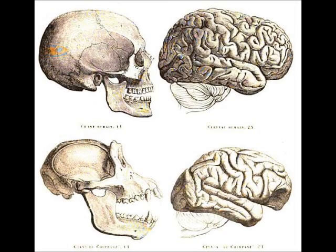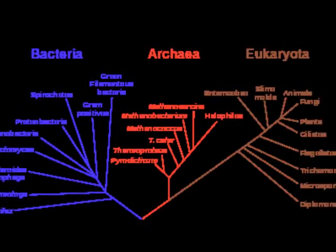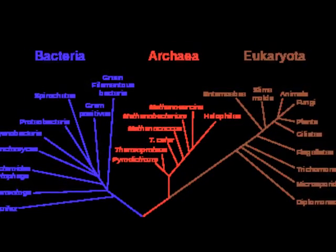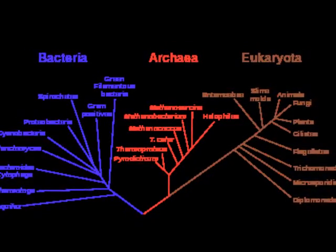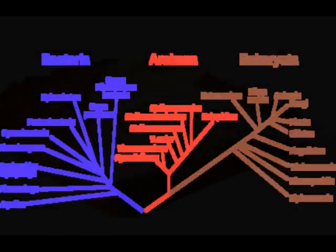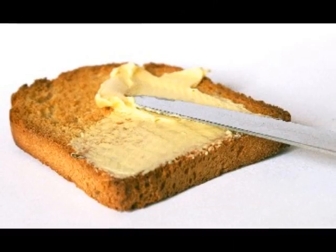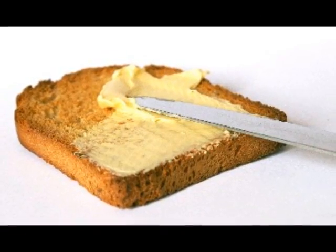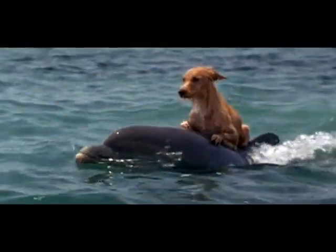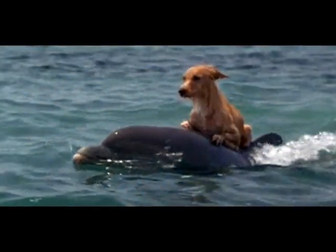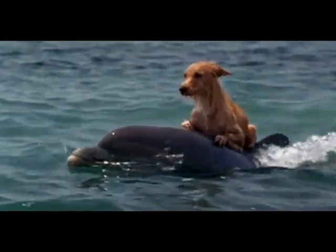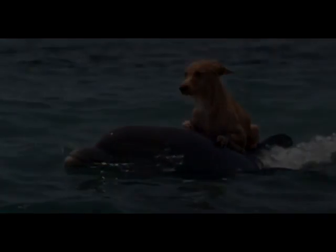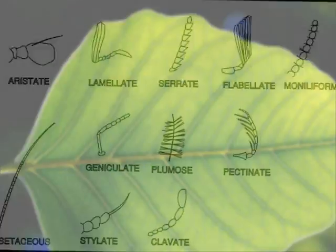Homologous structures prove evolution to be true because they show two animals have the same common ancestor. Homologous structures are one of the most widespread proofs of evolution, showing even things as unrelated as dolphins and dogs have the same bones in some parts of their body. Other common homologous structures are leaves, antenna, and reproductive organs.